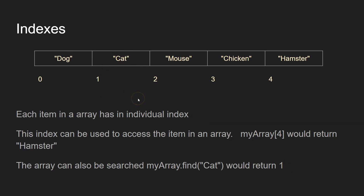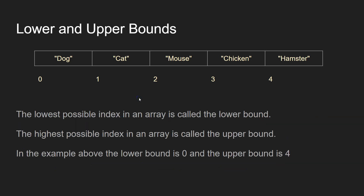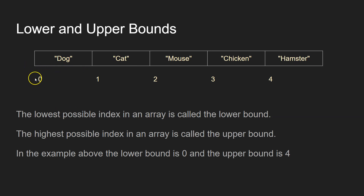So that's arrays. Now, what about lower and upper bounds? The lowest possible index in an array, which would be the one on the left-hand side, is known as the lower bound. In Python, in this example, Python starts indexing at zero, so the lowest possible bound is always zero.